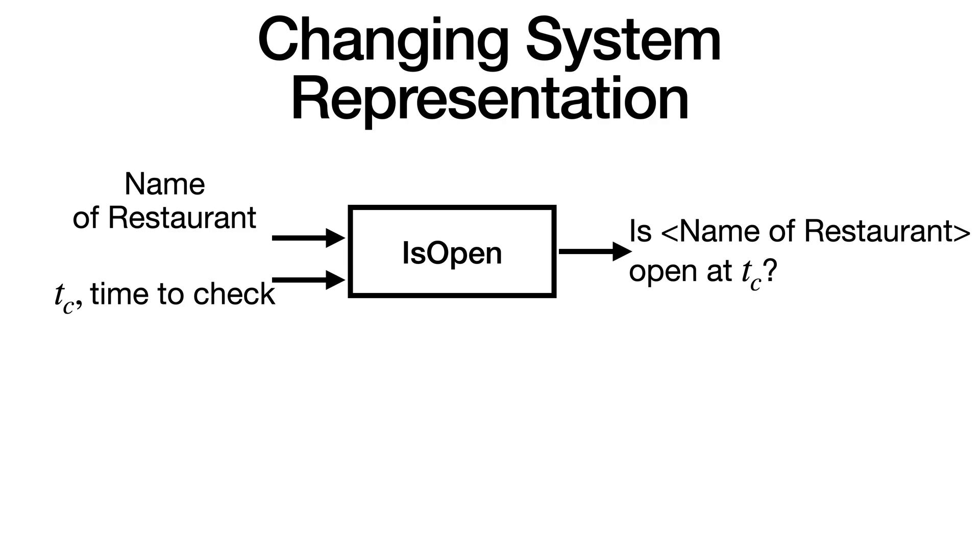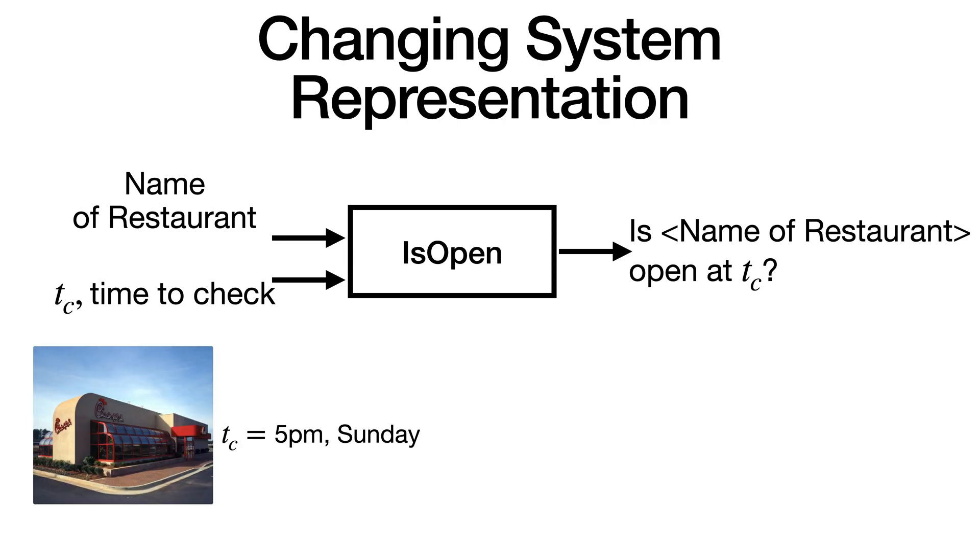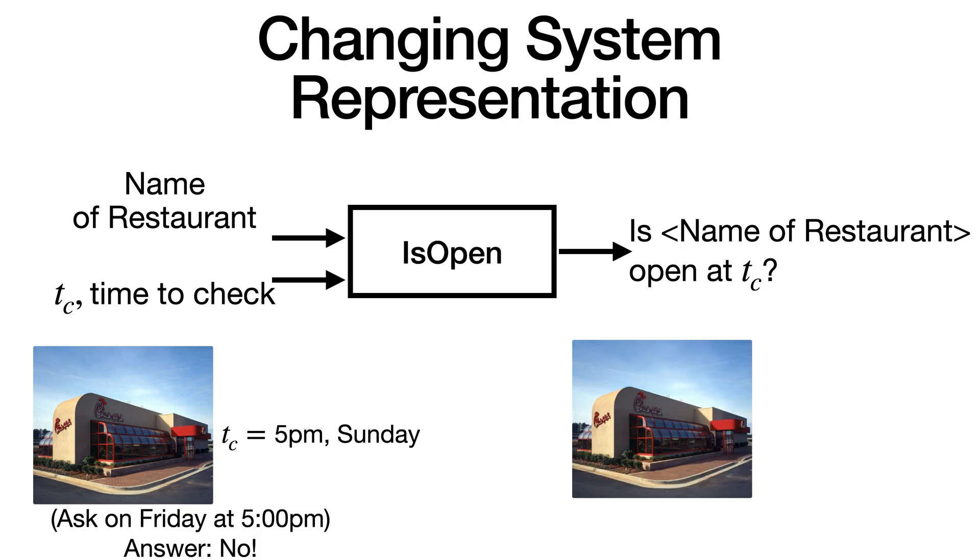In this case, the actual time you put in the name of the restaurant and TC into your system doesn't affect the output because the output is decoupled from the actual time variable t. So as an example, if I put in Chick-fil-A and for TC 5pm Sunday, and I ask this question at 5pm on Friday, the answer will be no. So this doesn't change if I put the same inputs into the system at another time. I can ask it on Sunday at 5pm and the answer is still going to be no.